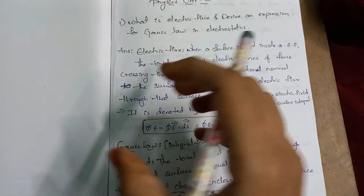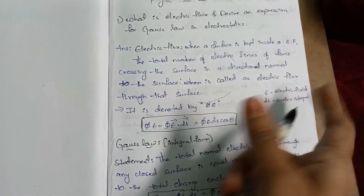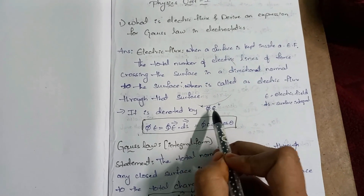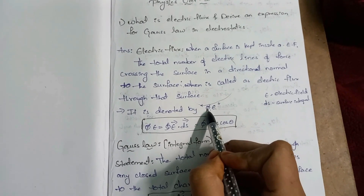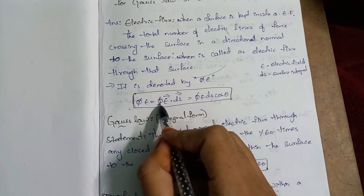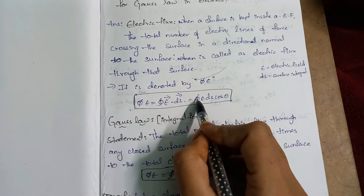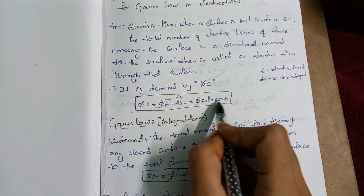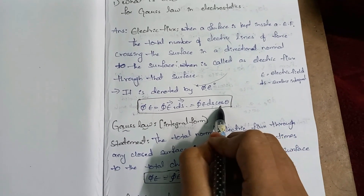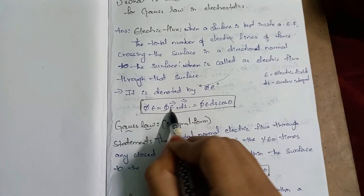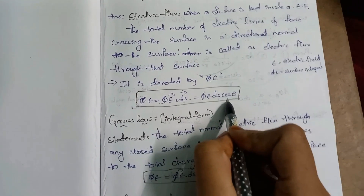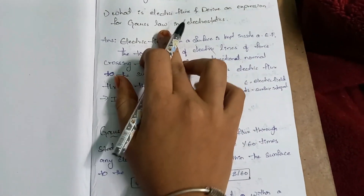The electric flux through the surface is given by the surface integral: φ = ∮E·ds, where E is the electric field and ds is the surface element. The dot product gives E ds cosθ. First we will discuss the electric flux.